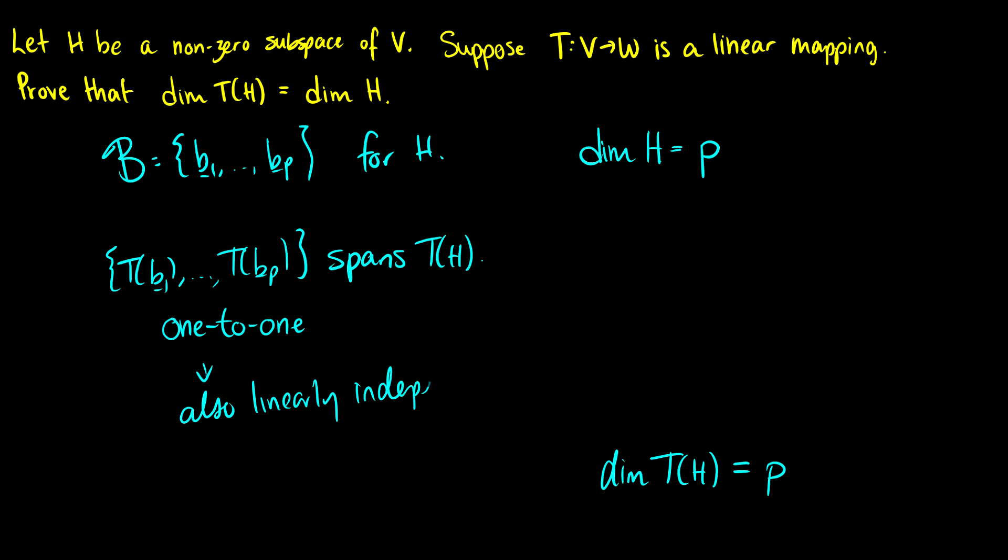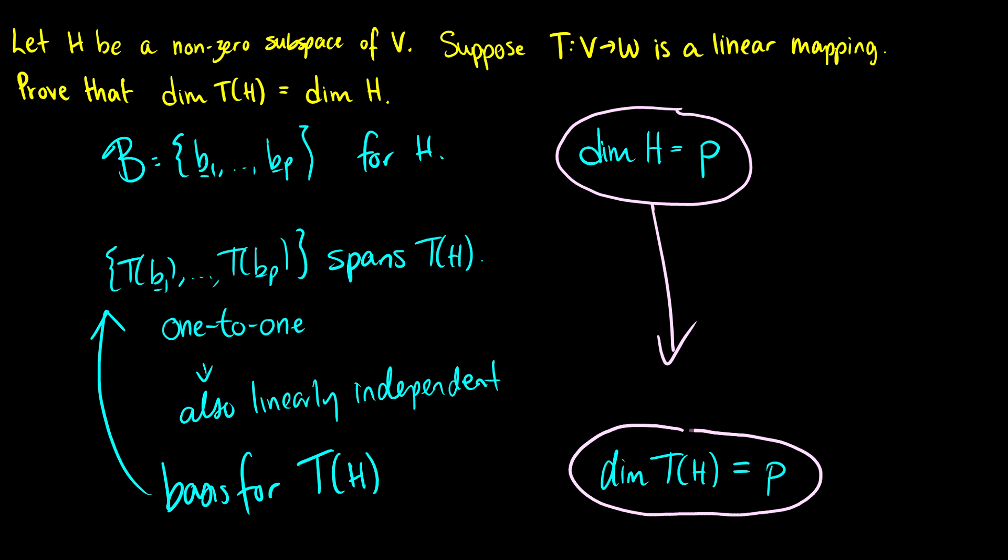So what does this mean? Well, it spans T(H) and it's linearly independent by the definition and the proof that we've done earlier. Therefore this T(v₁) all the way up to T(vₚ) is going to be a basis for T(H), which means that the basis for T(H) has p vectors, therefore the dimension of T(H) is p. So if we start with the dimension for H equal to p, then we're going to get the dimension T(H) equal to p as well. So the dimensions are the same.